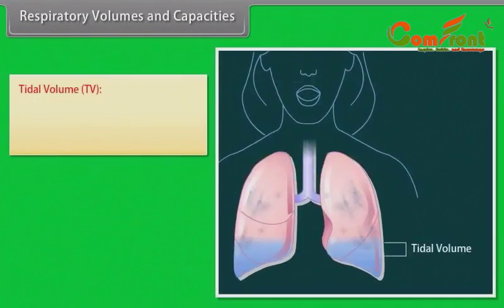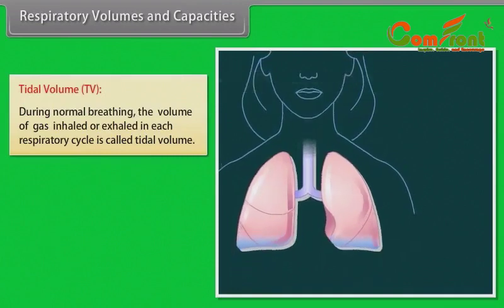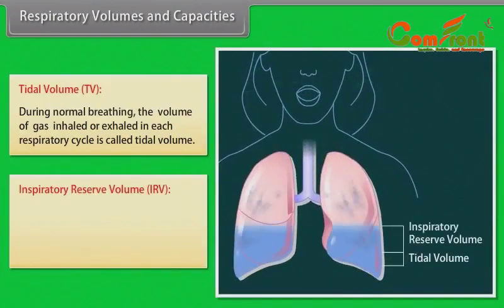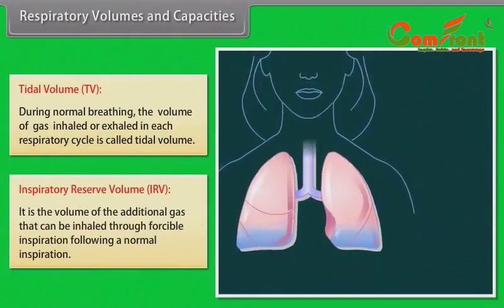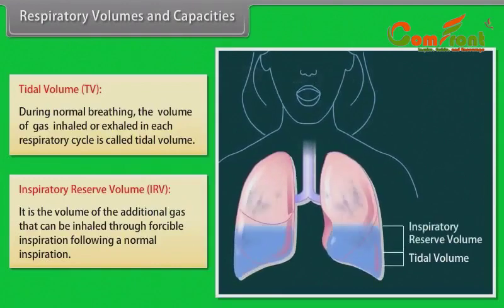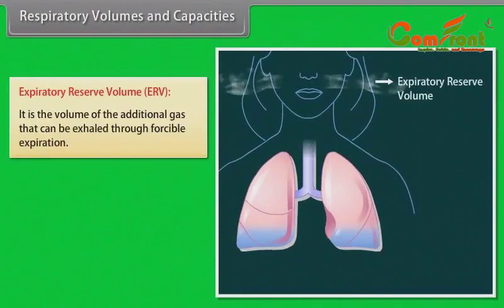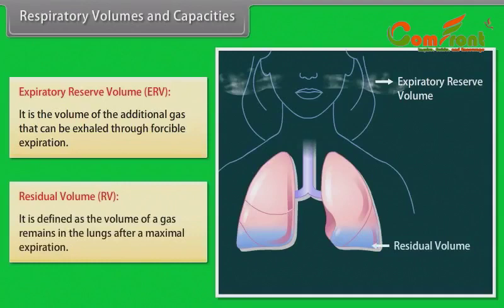Respiratory volumes and capacities: Tidal volume (TV) — during normal breathing, the volume of gas inhaled or exhaled in each respiratory cycle is called the tidal volume. Inspiratory reserve volume (IRV) — the volume of additional gas that can be inhaled through forcible inspiration following a normal inspiration. Expiratory reserve volume (ERV) — the volume of additional gas that can be exhaled through forcible expiration. Residual volume (RV) — the volume of gas that remains in the lungs after a maximal expiration.